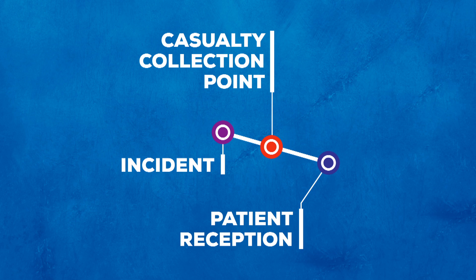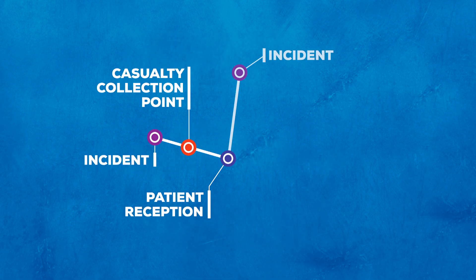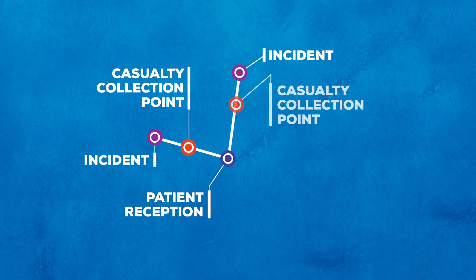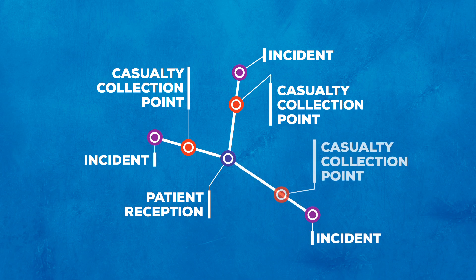The casualty collection point is not part of the field treatment site itself. It is where patients are first gathered from a patient-generating event before moving to the patient reception area. This location is important because multiple incidents may be sending patients to the same field treatment site, and personnel at this location will need to communicate with the patient reception area.